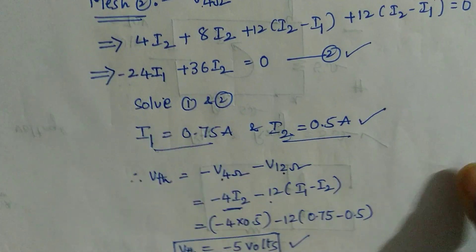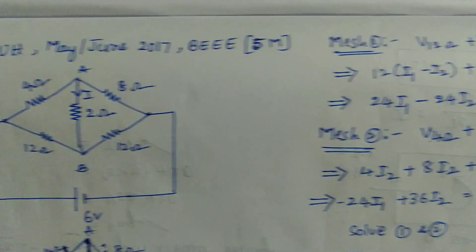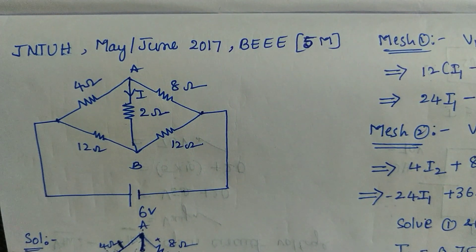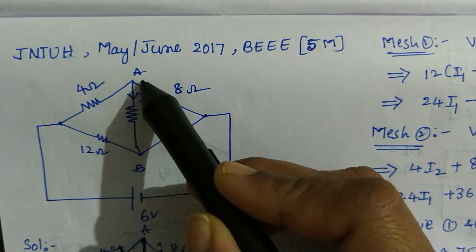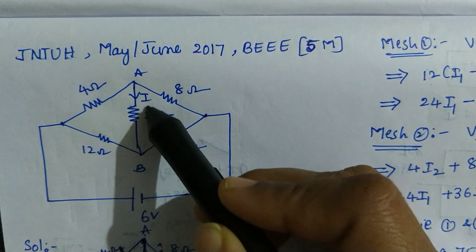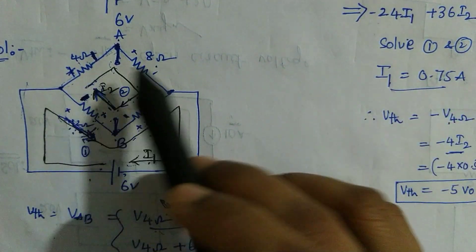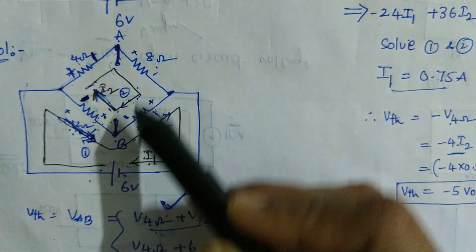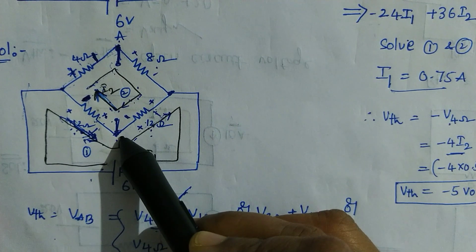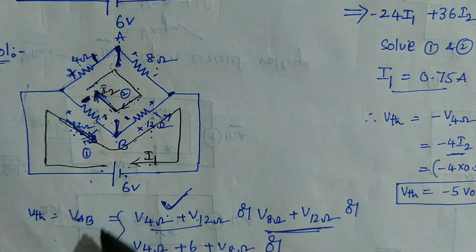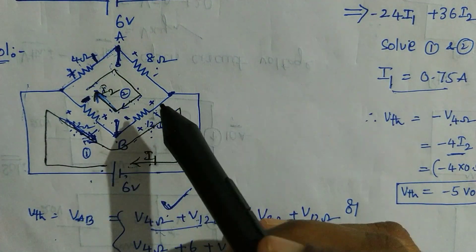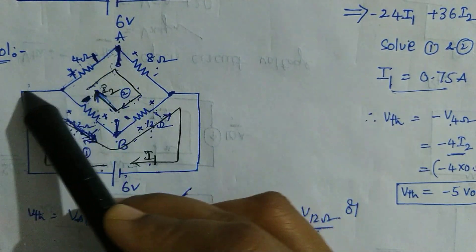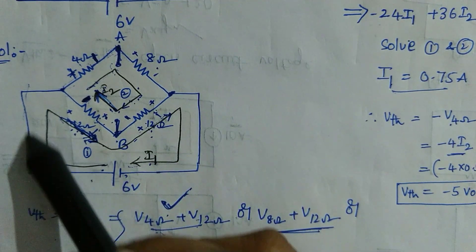Now let us go with the third problem. This is from JNTU Hyderabad, May-June 2017, Basic Electrical and Electronics Engineering for 5 marks. In this problem we need to find the current in this branch. First step: disconnect this particular element. If we disconnect, we get the circuit with points A and B, which are the open circuit terminals. V Thevenin means open circuit voltage, so V Thevenin will be considered as VAB. There are four possible paths to reach from A to B.